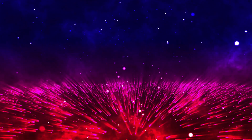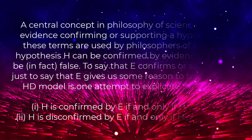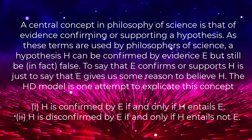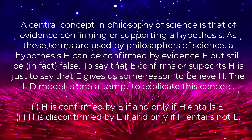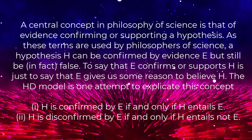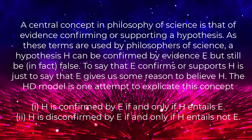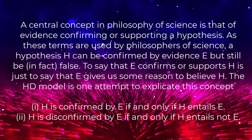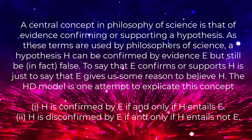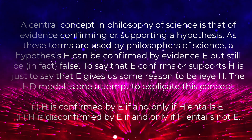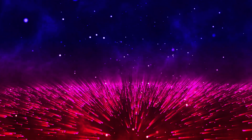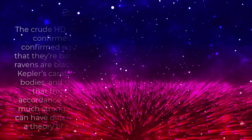A central concept in philosophy of science is that of evidence confirming or supporting a hypothesis. As these terms are used by philosophers of science, a hypothesis H can be confirmed by evidence E but still be in fact false. To say that E confirms or supports H is just to say that E gives us some reason to believe H. The HD model is one attempt to explicate this concept: H is confirmed by E if and only if H entails E; H is disconfirmed by E if and only if H entails not-E.